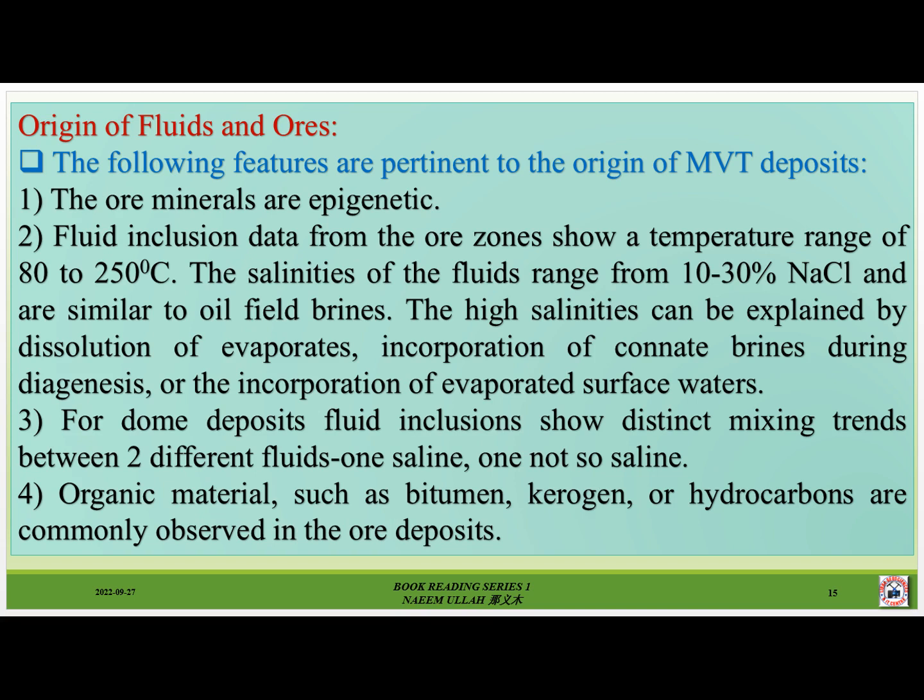The following features are pertinent to the origin of MVT deposits. First, the ore minerals are epigenetic. Second, fluid inclusion data from the ore zones show a temperature range of 80 to 250 degrees Celsius; salinities of the fluids range from 10 to 30 percent NaCl, and they are similar to oil-field brines. The high salinities can be explained by dissolution of evaporites, incorporation of connate brines during diagenesis, or the incorporation of evaporated surface waters. Third, for some deposits fluid inclusions show distinct mixing trends between two different fluids — one saline and one less saline. Fourth, organic materials such as bitumen, kerogen, or hydrocarbons are commonly observed in the ore deposits.